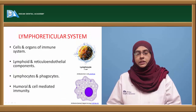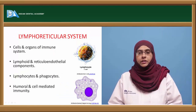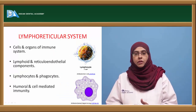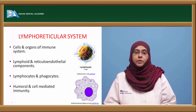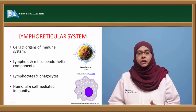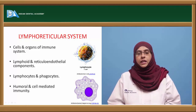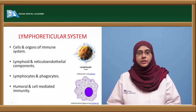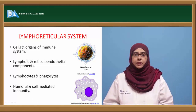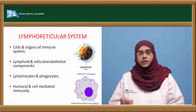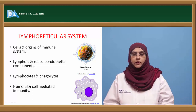Let us discuss what is the lymphoreticular system. The lymphoreticular system is a system comprising cells and organs of the immune system — a distinct and diverse group of cells involved in the production of immunity. These cells are distributed widely in the different types of lymphoid organs, which develop lymphocytes to produce and mount an immune response against pathogenic microorganisms.